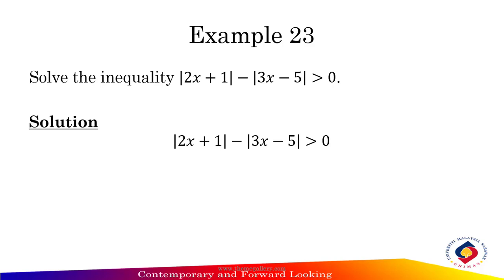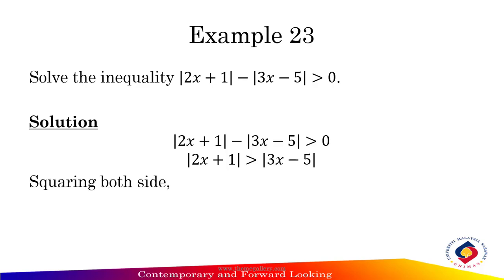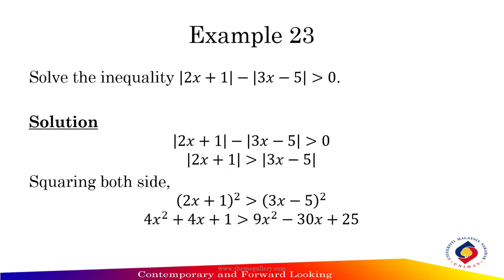Example 23: Solve the inequality |2x + 1| − |3x − 5| > 0. Add |3x − 5| to both sides to get |2x + 1| > |3x − 5|. Next, squaring both sides gives (2x + 1)² > (3x − 5)². Expanding: 4x² + 4x + 1 > 9x² − 30x + 25.